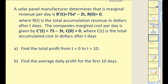Let's look at an application. A solar panel manufacturer determines that its marginal revenue per day is given by a certain function, where total revenue when t equals zero is zero. The company also determines that its marginal cost per day is given by another function, where total cost when t equals zero is also zero.